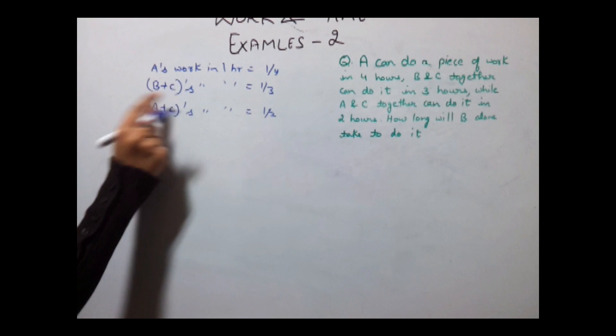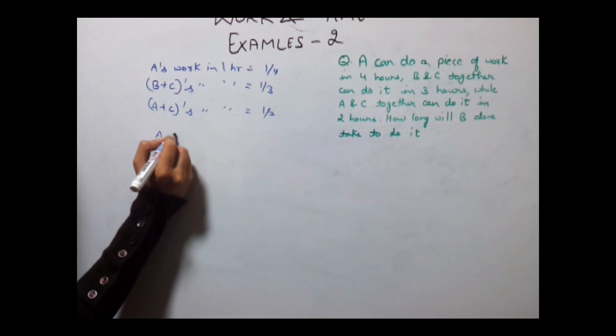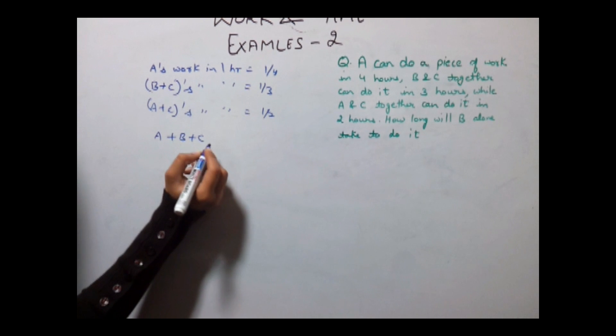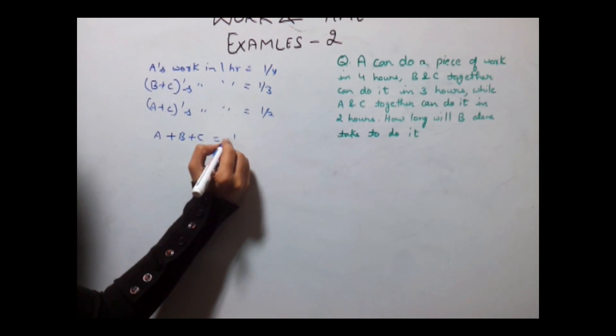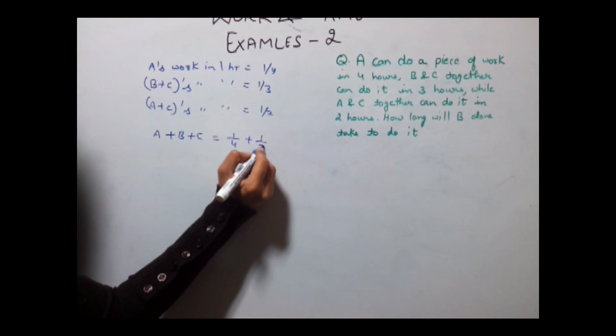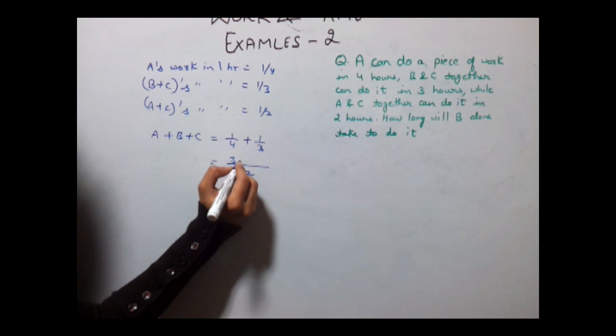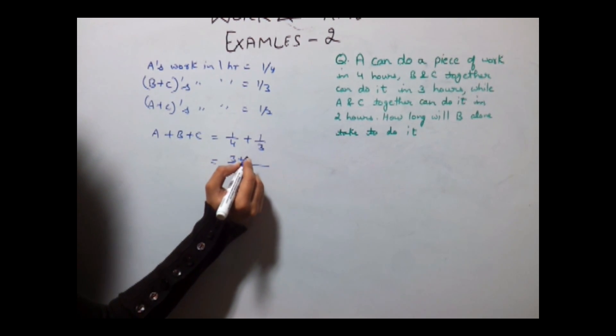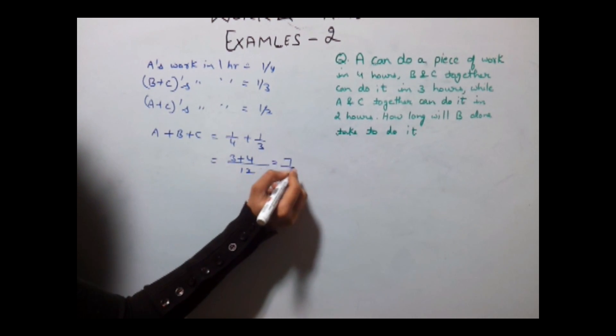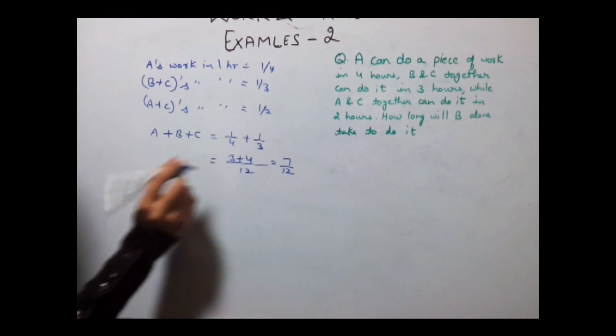Now A plus B plus C will give us the total work done by them. That is A plus B plus C's work is 1/4 plus B plus C that is 1/3 which gives us 12 and 3 plus 4 equals to 7/12. And we need to calculate the work of B only.